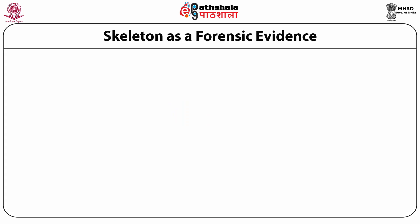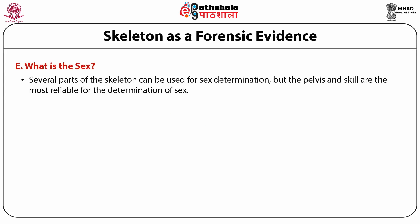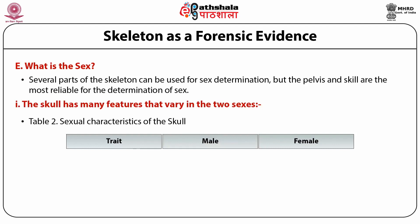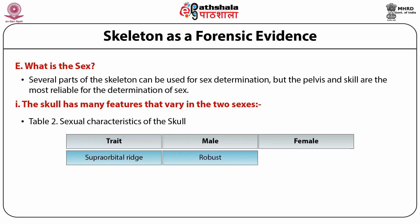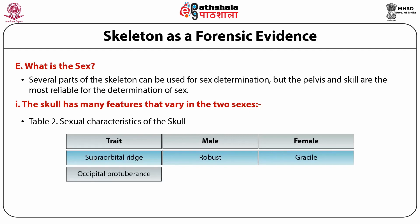Several elements of the skeleton can be used for determination of sex in an adult, but the pelvis and skull are the most reliable elements. The skull has many features that vary between the sexes. The supraorbital ridges (ridge above the eye) are robust in males but gracile in females. The occipital protuberances at the base of the skull are robust in males and gracile in females. The mastoid process (bony process behind the ear canal) is long and broad in males, whereas in females it is short.